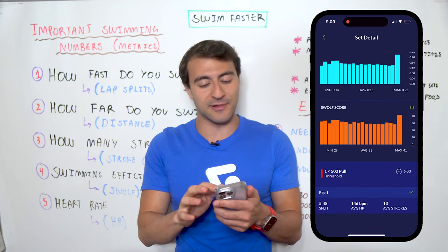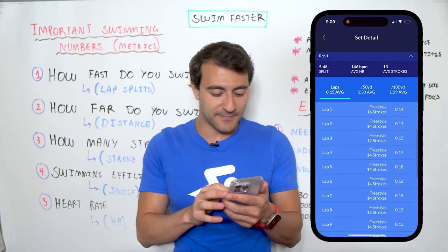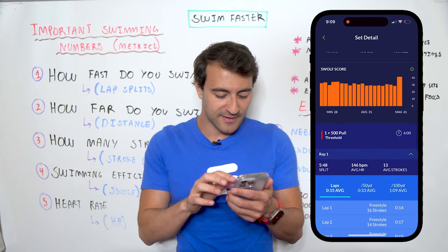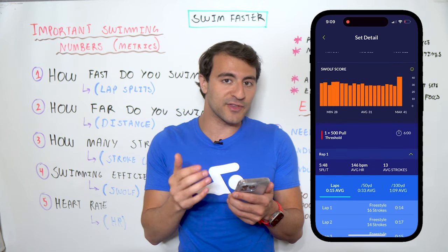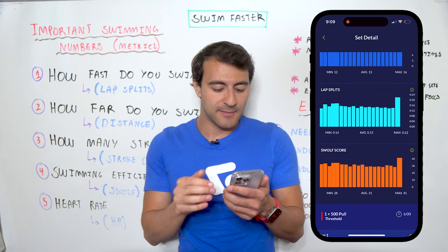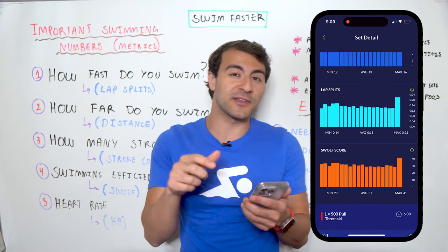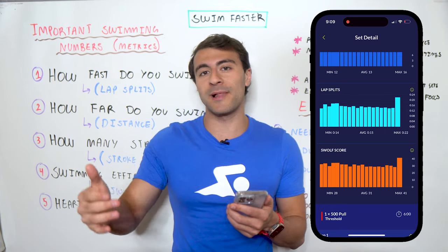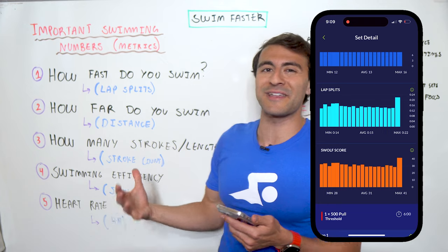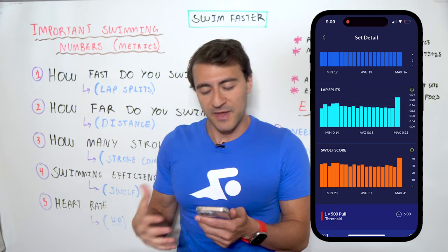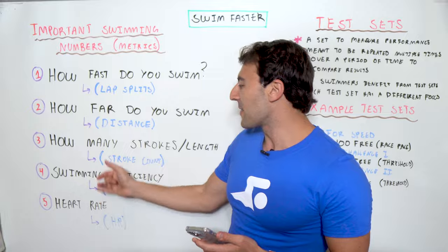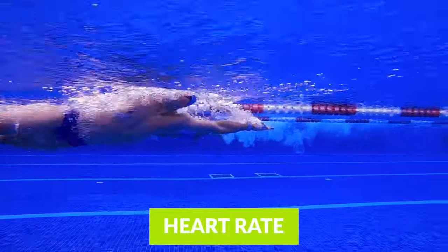Scrolling to the 500 set, my average SWOLF score was 31 — and you can see it rising toward the end as my tempo increased and efficiency dropped. I swam the 500 in 5:48, averaged 13 strokes per length, average SWOLF of 31, and average lap split of 15 seconds in this 25-yard pool. The SWOLF score is a great way to measure overall efficiency.